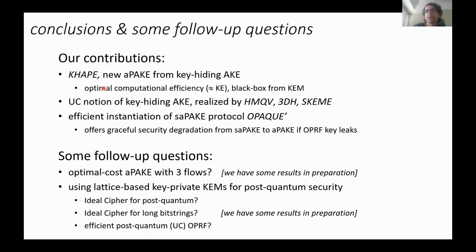With that, I conclude. We showed a new APAKE construction with optimal efficiency. In the process, we defined key-hiding AKEs and showed that some protocols realize it efficiently, with interesting implications for strong asymmetric OPAQUE. Some follow-up questions remain about optimal round complexity and lattice-based implications. Thank you.